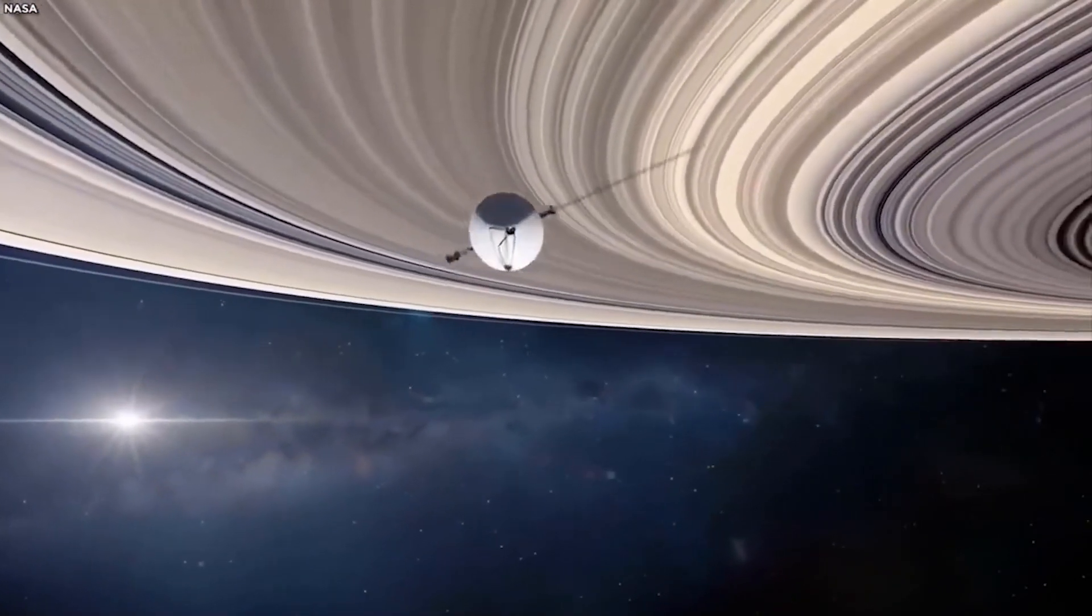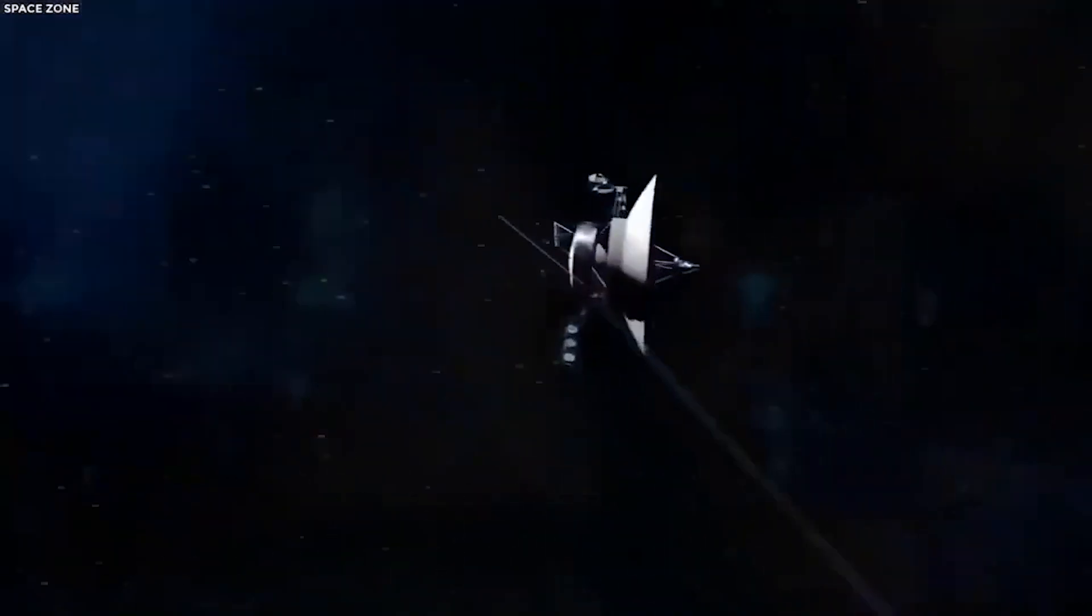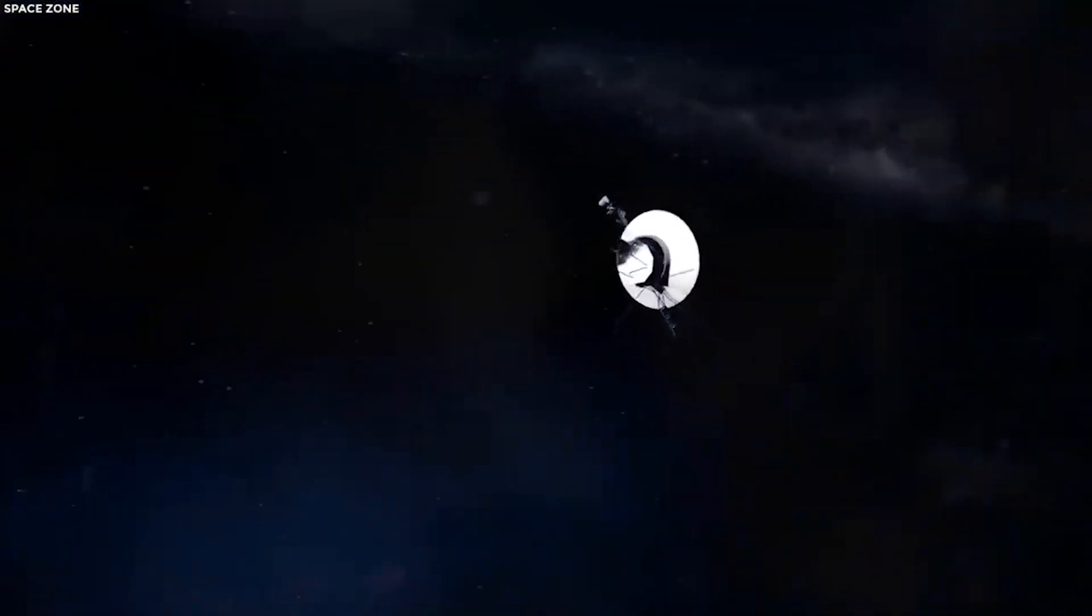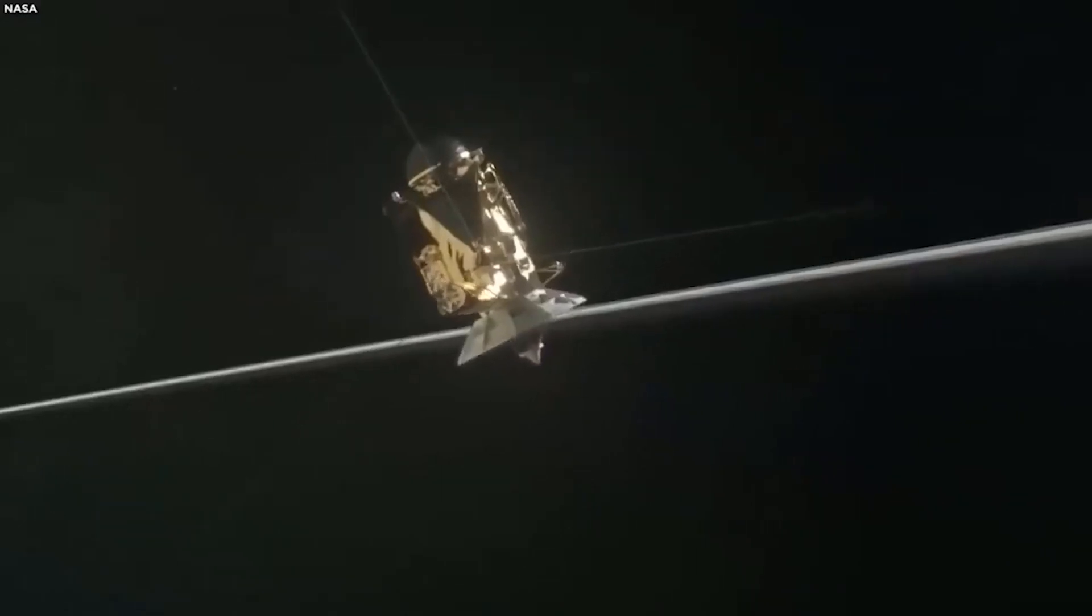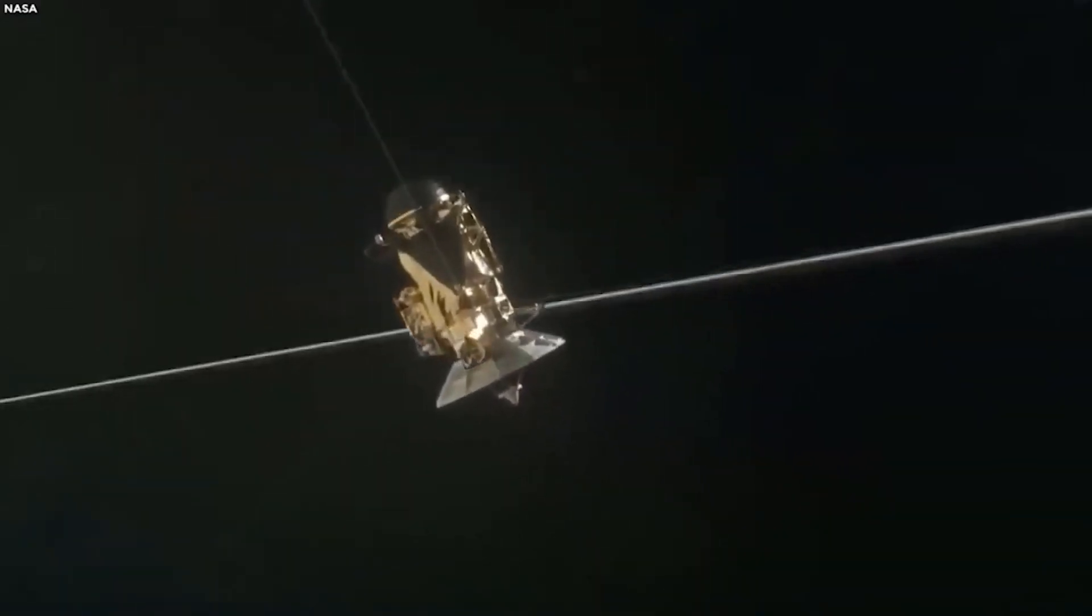NASA's Voyager 1 spacecraft has entered a new region at the far reaches of our solar system that scientists feel is the final area the spacecraft has to cross before reaching interstellar space.